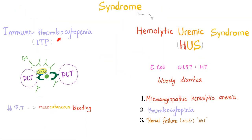ITP is not a syndrome. You basically have IgG antibodies against the GPIIb/IIIa receptors of the platelets. Now the platelets are toast — you have thrombocytopenia. There is no syndrome; everything makes sense here. Hemolytic uremic syndrome, however, doesn't make any sense: you have E. coli which produces a shiga-like toxin.